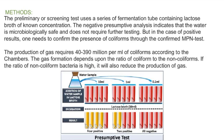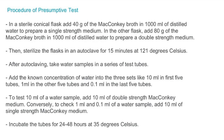If the result is positive, it indicates impurities and we proceed to the second test — the confirmatory test. The production of gas in the presumptive test corresponds to 40 to 390 coliforms per ml. Gas formation depends on coliform and non-coliform bacteria; if non-coliform bacteria is high, gas production is reduced.